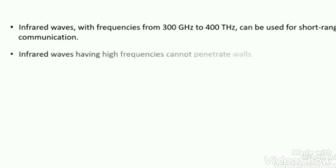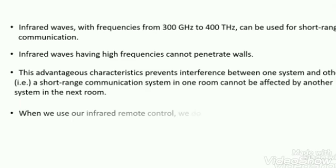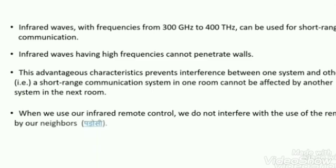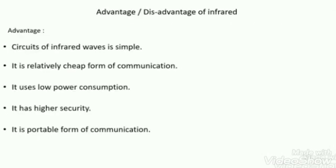The infrared wave frequency is very high, ranging from 300 GHz to 400 THz. It can be used only for short range communication. Infrared waves support very high frequencies but cannot penetrate walls. This characteristic prevents interference between systems — a short range communication system in one room cannot be affected by another system in the adjacent room. For example, using an infrared remote control does not interfere with a neighbor's remote control.